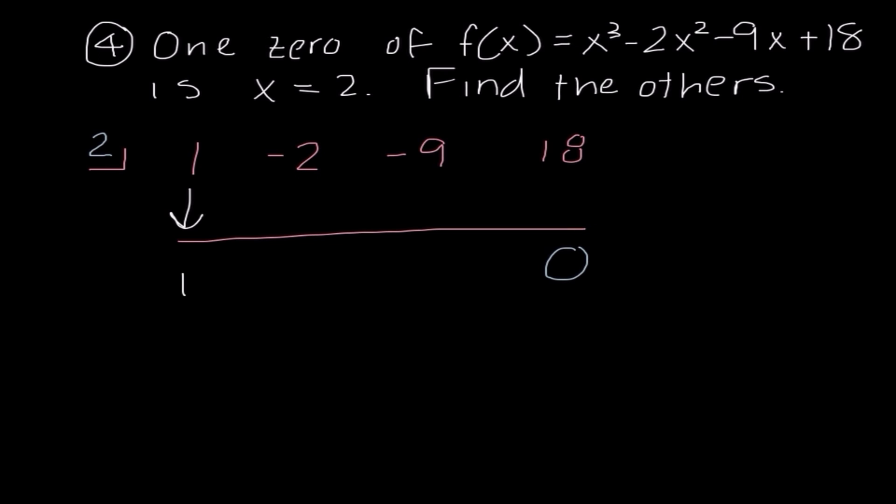So I'm going to start with bringing down the 1. 1 times 2 is 2, so I get 0. 0 times 2 is 0. When I add, I get negative 9. Negative 2 times 9 is negative 18. So I do indeed get 0 as my remainder. Now, this group of numbers doesn't help me find the other zeros. But what we just learned is that I can write this as a polynomial. So I know it's going to be one degree lower than this polynomial. So it's going to become x squared plus 0x minus 9.